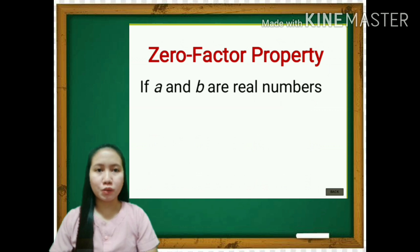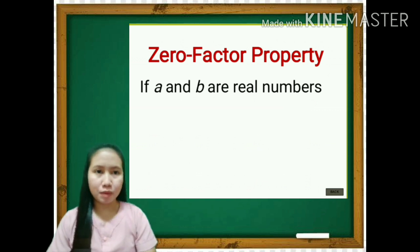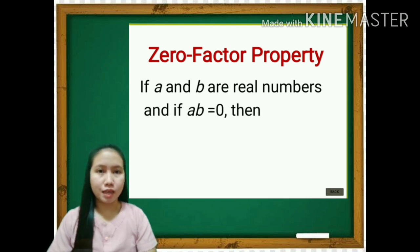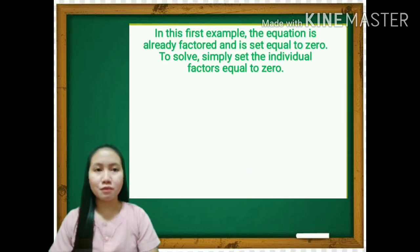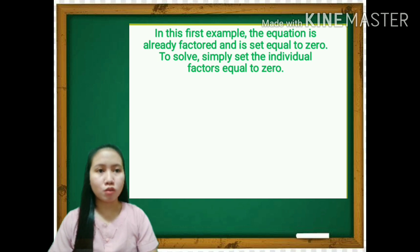Now we go to the zero factor property. If a and b are real numbers and a times b equals 0, then a equals 0 or b equals 0. In the first example, the equation is already factored and set equal to 0. To solve, simply set the individual factors equal to 0.